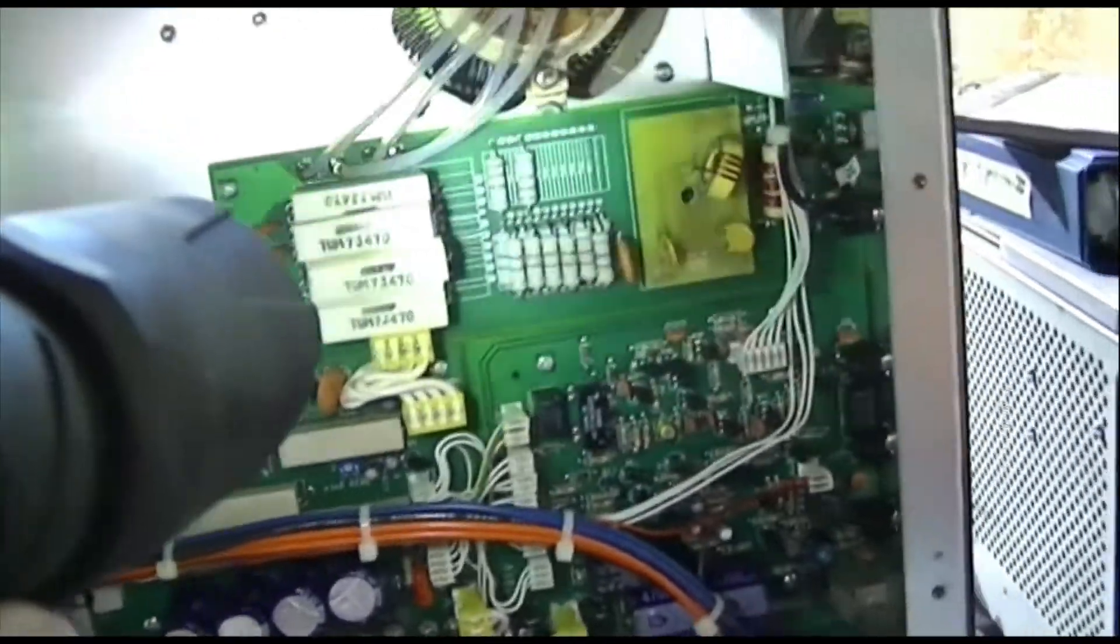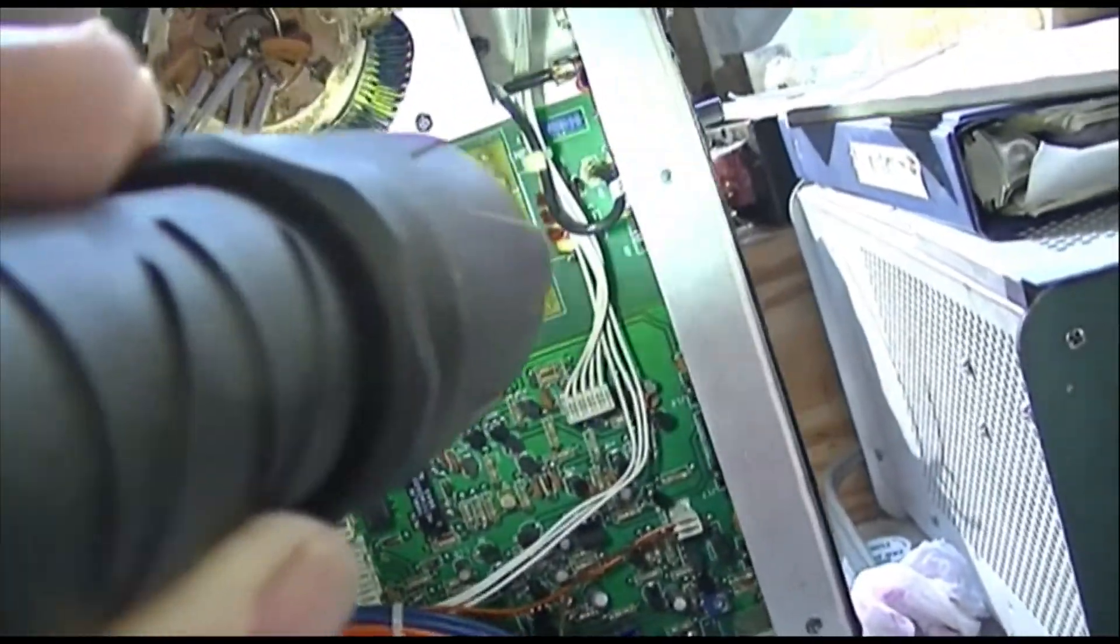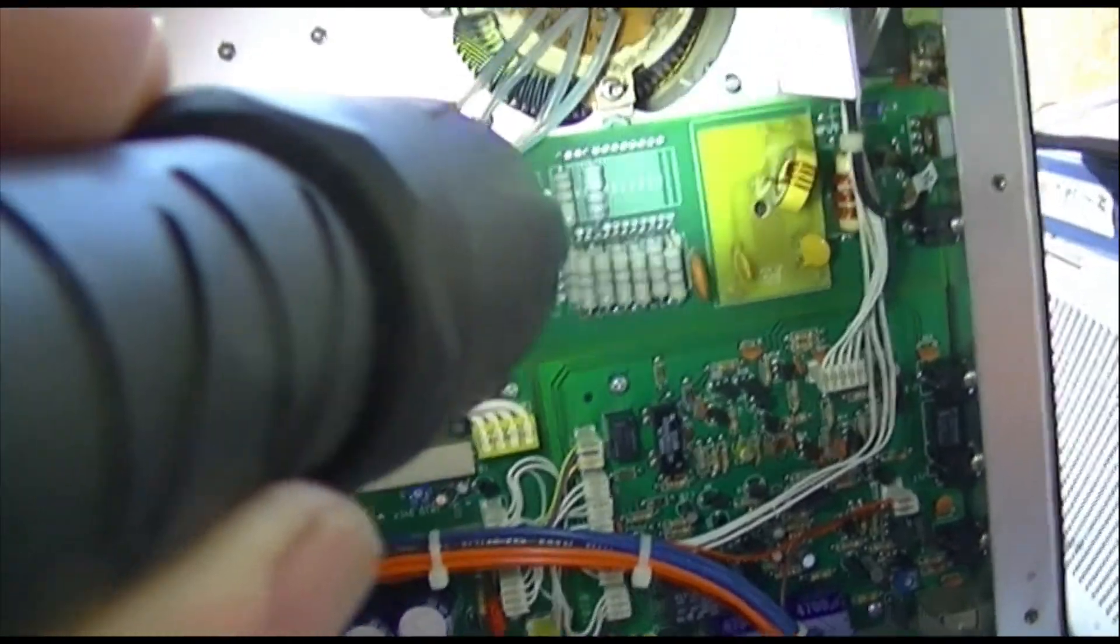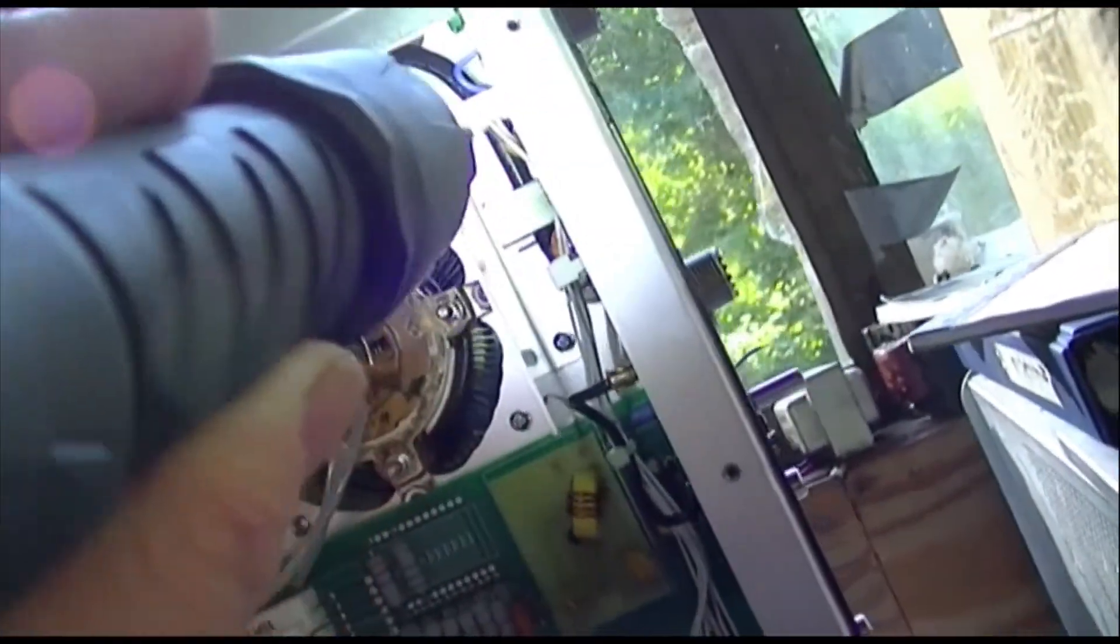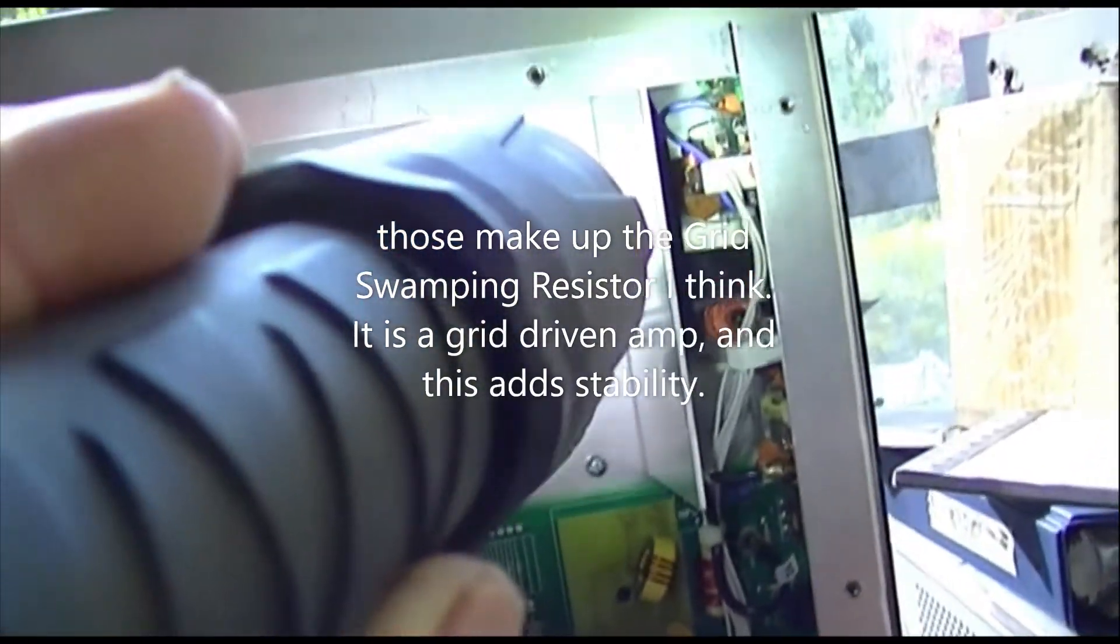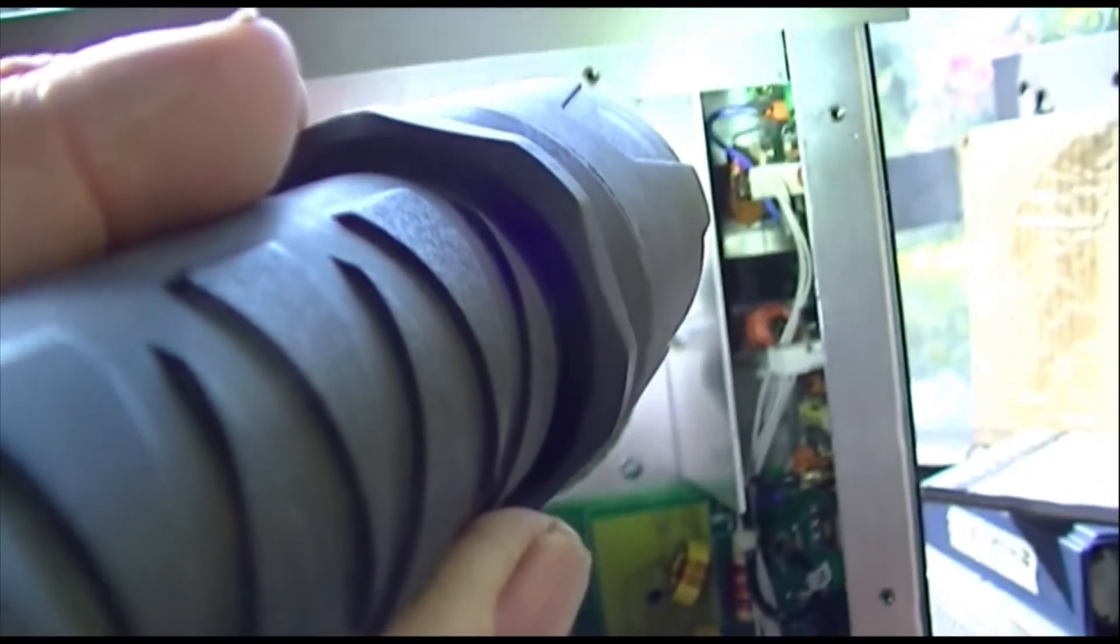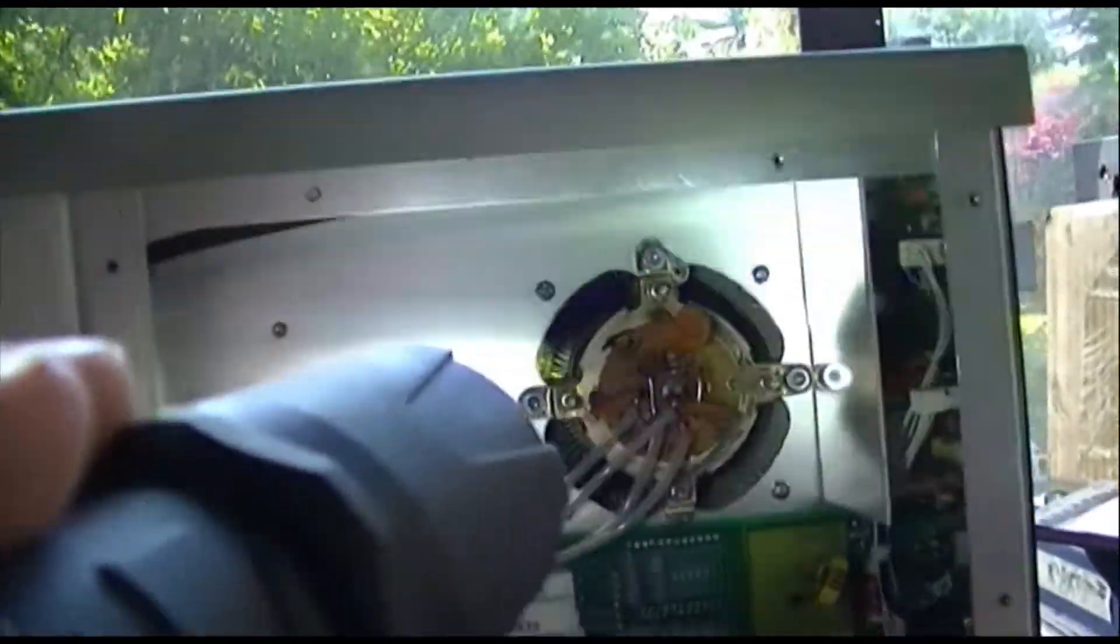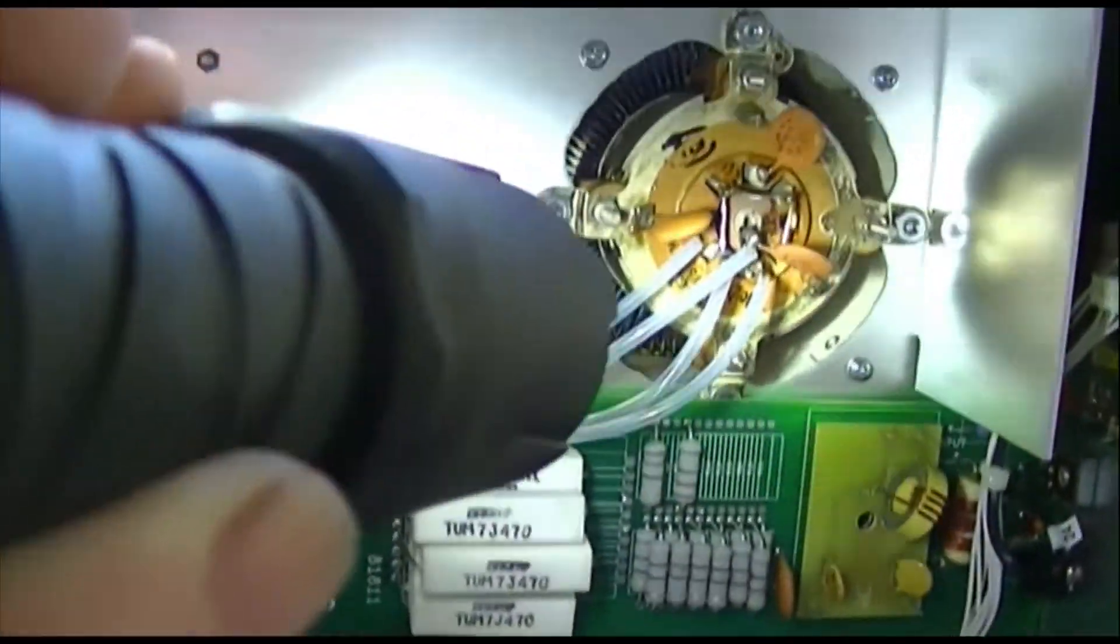Looks to me like it's part of a soft start mechanism here with all those power resistors. And this is the power meter circuitry connected with the output connector. Here's the bottom of the tube and a view through the tube.